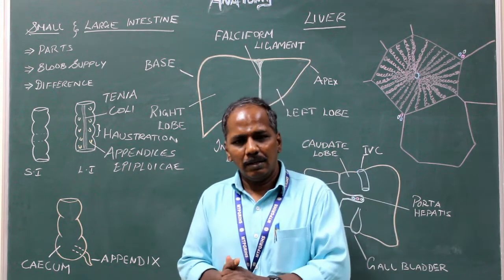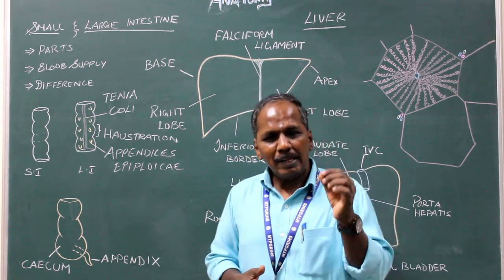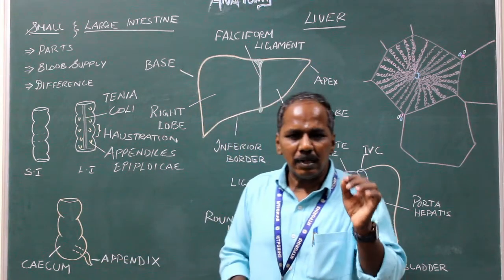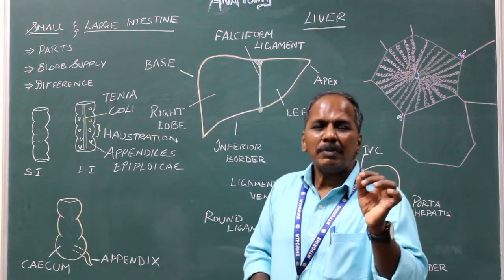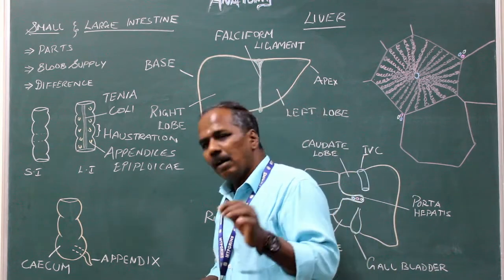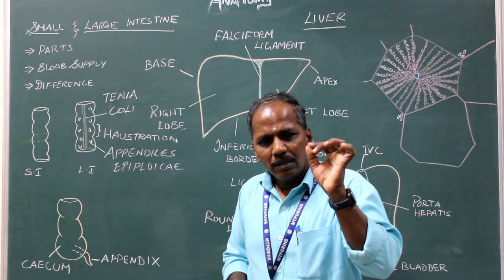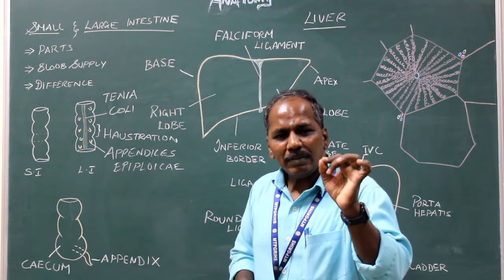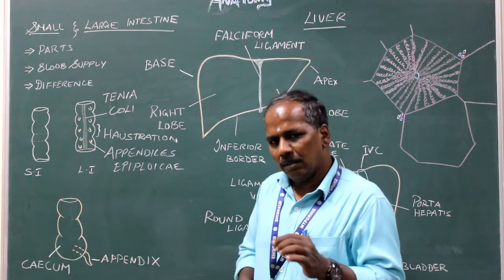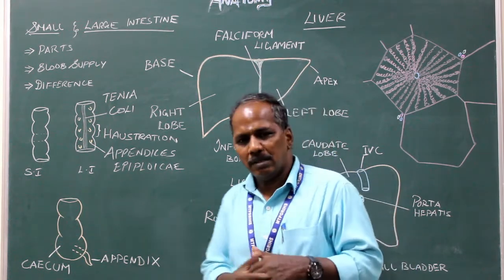Blood supply of the appendix: the appendicular artery. Venous drainage: the veins from the appendix drain into the superior mesenteric vein. Nerve supply — sympathetic: spinal nerves arising from the T10 segment of the spinal cord. Parasympathetic: the vagus nerve.